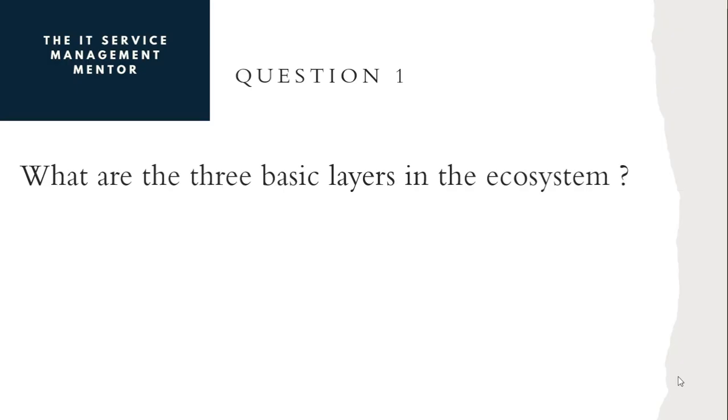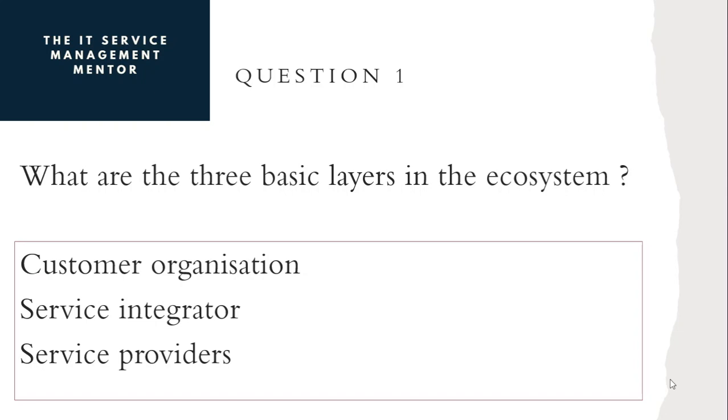Question number one. What are the three basic layers in the ecosystem? They are customer organisation, service integrator, and service providers.